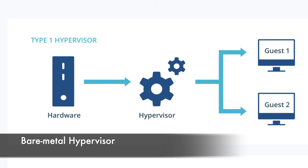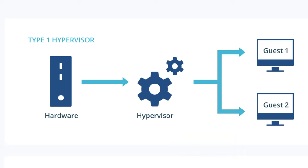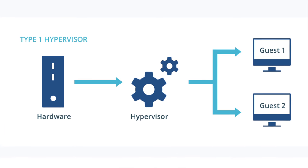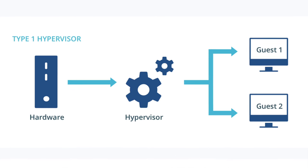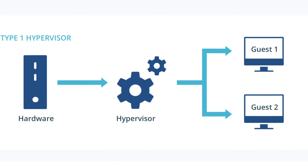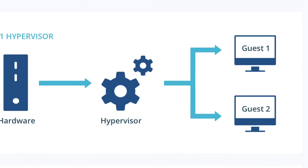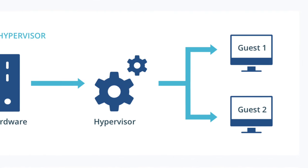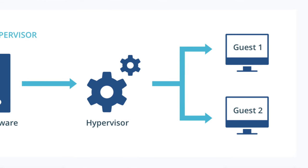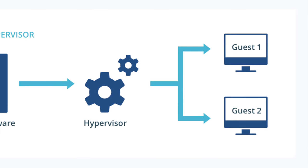The other version is slightly different — this is where you potentially remove the operating system from the computer altogether, from the server, from the laptop, any form of computer, and replace it with server virtualization technology. The big one here is VMware ESXi. You boot into VMware ESXi as the operating system itself, then from another computer you go to the web browser and access the ESXi server to build and manage all of your VMs from there.